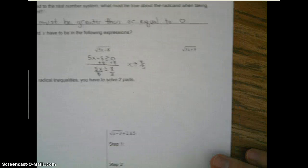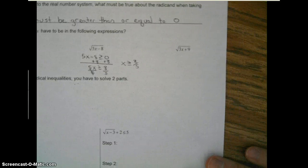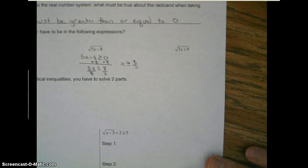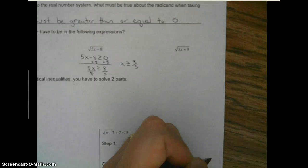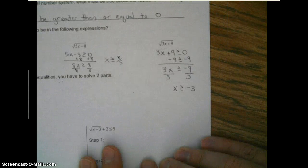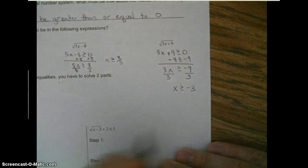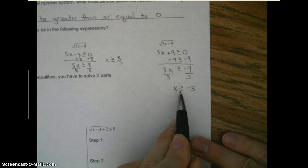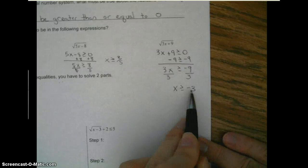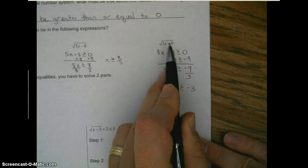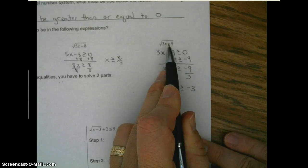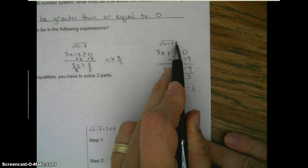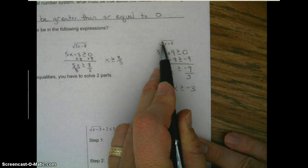You try the next one. Pause the video and give it a try. And x has to be greater than or equal to negative three in order for our radicand to be greater than or equal to zero — in order for this to be positive.